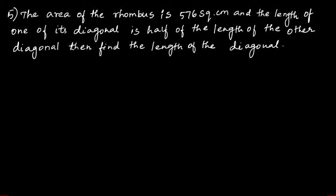Fifth question: The area of the rhombus is 576 square centimeter and the length of one of its diagonal is half of the length of the other diagonal. Then find the length of the diagonal.